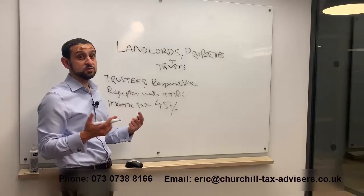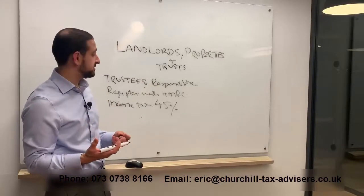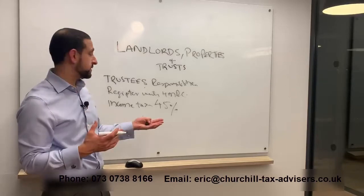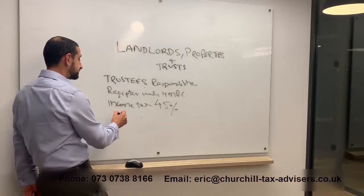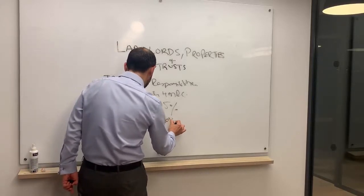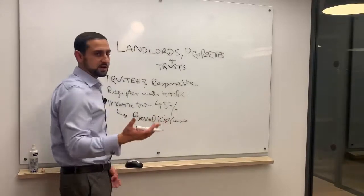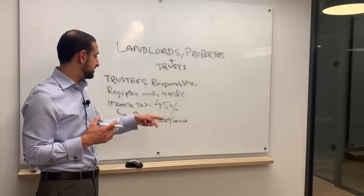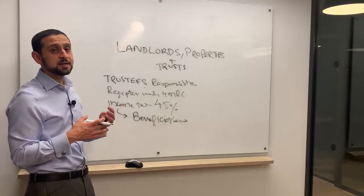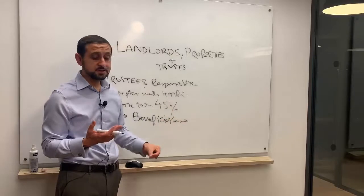Trusts pay tax at 45%, and you have to make payments on account. From a cash flow perspective this can be very expensive. I'm having to close down a lot of trusts these days for clients because they just cannot keep up with 45% payments. If this income is distributed to beneficiaries, and they're basic rate taxpayers paying tax at 20%, they can get a tax credit, but first the trust has to pay its tax.